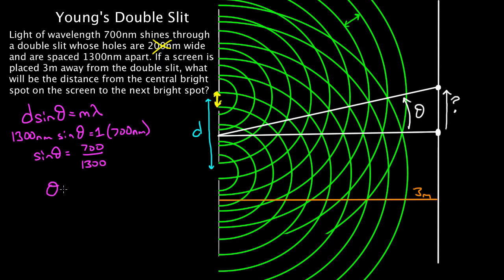I'll solve this for theta. How do I get theta? I've got to use inverse sine of both sides. So the inverse sine of sine theta is just theta, and the inverse sine of this side gives me 32.6 degrees.